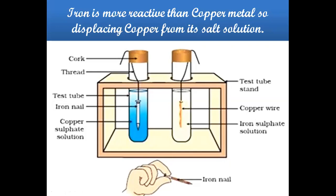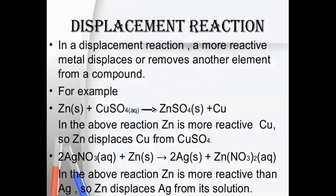The cause of the change: iron is more reactive than copper metal, so it displaces copper from its salt solution. In a displacement reaction, a more reactive metal displaces or removes another element from a compound which is present in the form of solution.